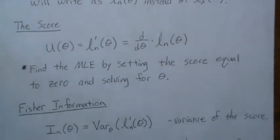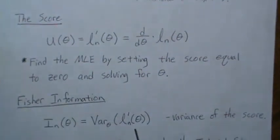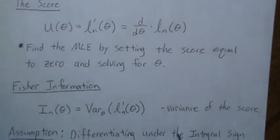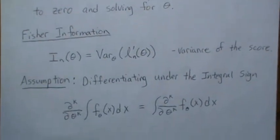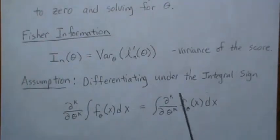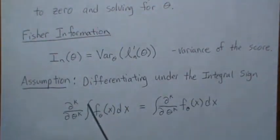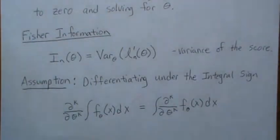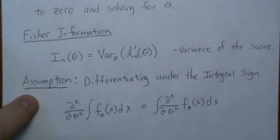The Fisher information is the variance of the score function, or the variance of the score. It's represented by capital I sub n of theta. Now the big assumption here is that we can differentiate under the integral sign — meaning if we want to take the derivative, we can pull it through the integral sign. In most common distributions this is easily satisfied, but we have to assume it's true in general.